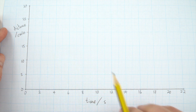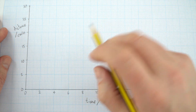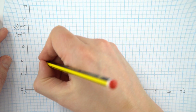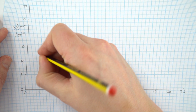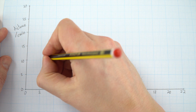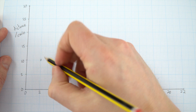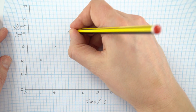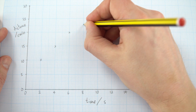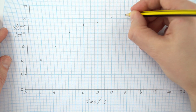So now I've labelled both of the axes. It's always worth taking extra care when it comes to plotting your points. When you do this you don't need to do a massive cross or a small circle — I just find that putting a small cross like this is absolutely fine. So maybe you put your data in and it looks something a bit like this.